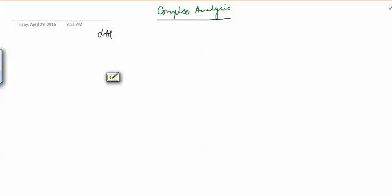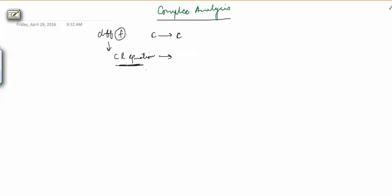Welcome to this next video on complex analysis. Till now, we have studied what a differentiable function is. We have been talking about functions from C to C and studied how to check the differentiability of a function. For that, we studied CR equations and then we saw that CR equations are not sufficient — they are only necessary for differentiability. Therefore, we put an extra condition on the derivatives of U and V, the real and imaginary parts, to make CR conditions sufficient as well.